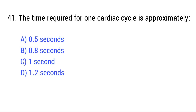Question number 41. The time required for one cardiac cycle is approximately? The right answer is option B: 0.8 seconds.